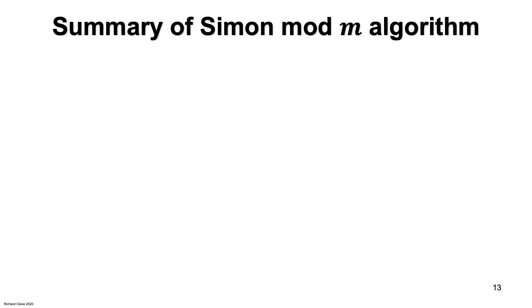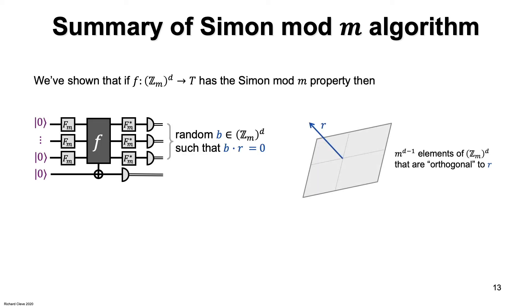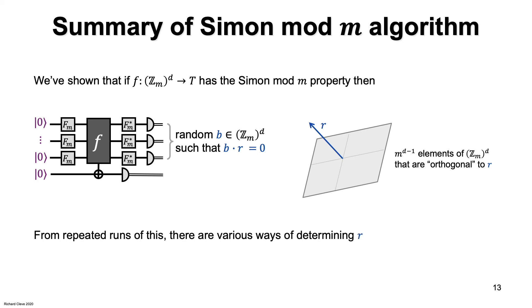Let's summarize where we are with our Simon mod m algorithm. We've shown that if a function has the Simon mod m property, then the result of this circuit is a random b that's orthogonal to r — a random sample from the space of points orthogonal to r. This was shown for d equals 2 but the methodology carries through for larger d. As with Simon's algorithm, by making repeated runs we can acquire information about r.